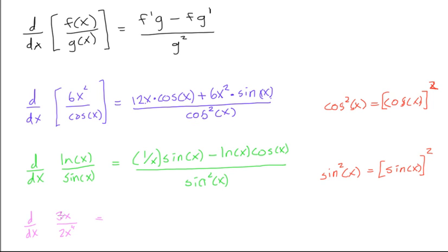So this will be equal to, well, f prime is just going to be 3 times g is times 2x to the fourth minus 3x, that's just our f, times g prime, which is 8x, 8x, all over 2x to the fourth squared. So it's the same as 2x to the eighth.